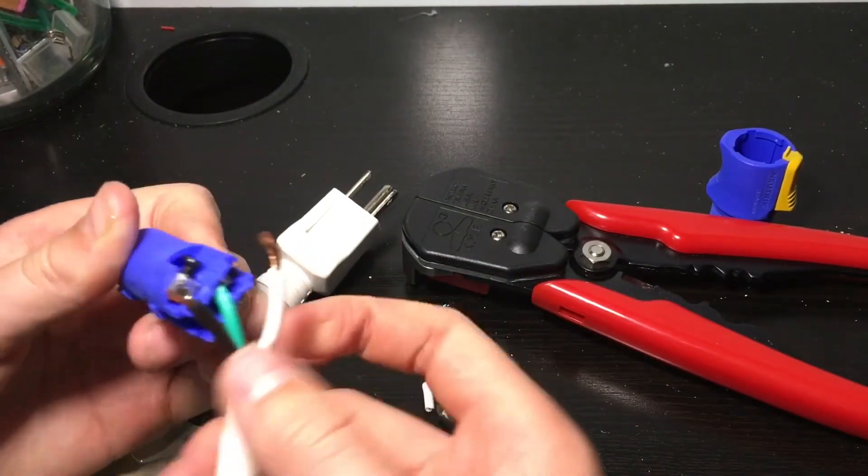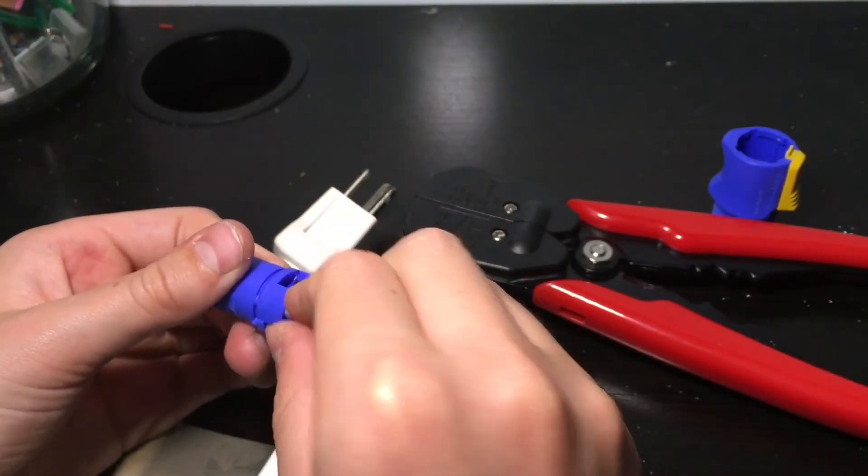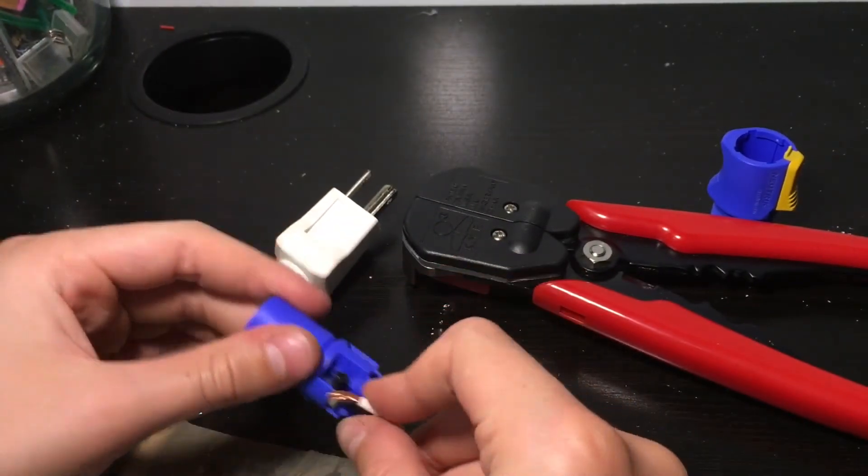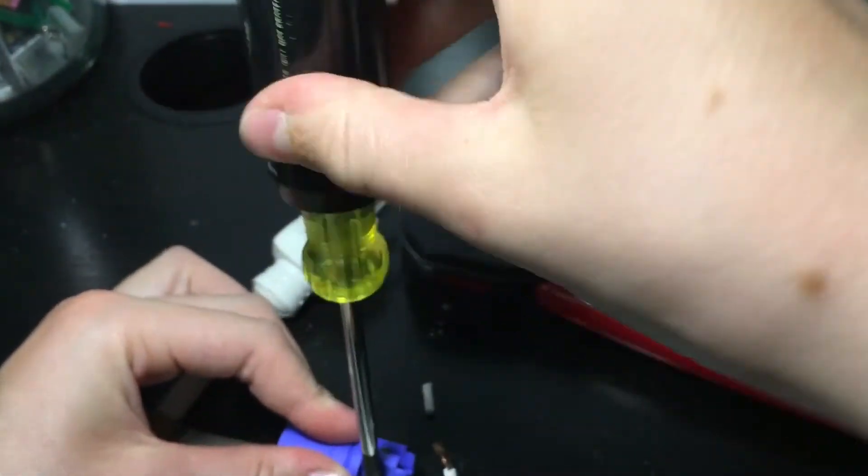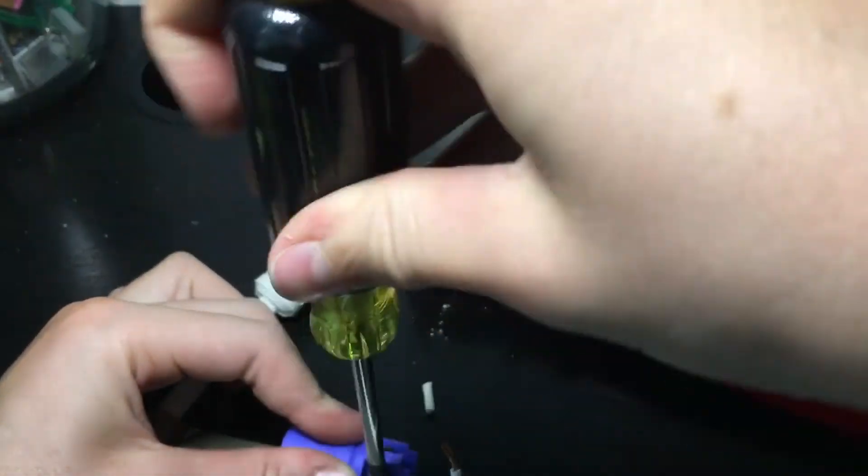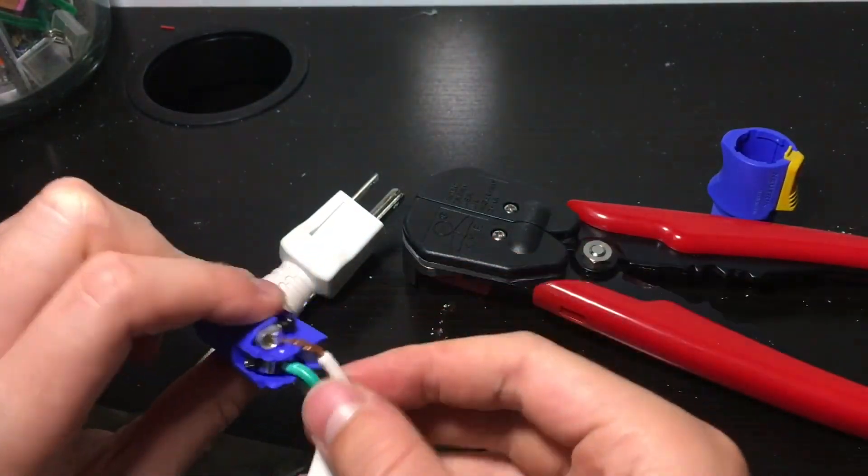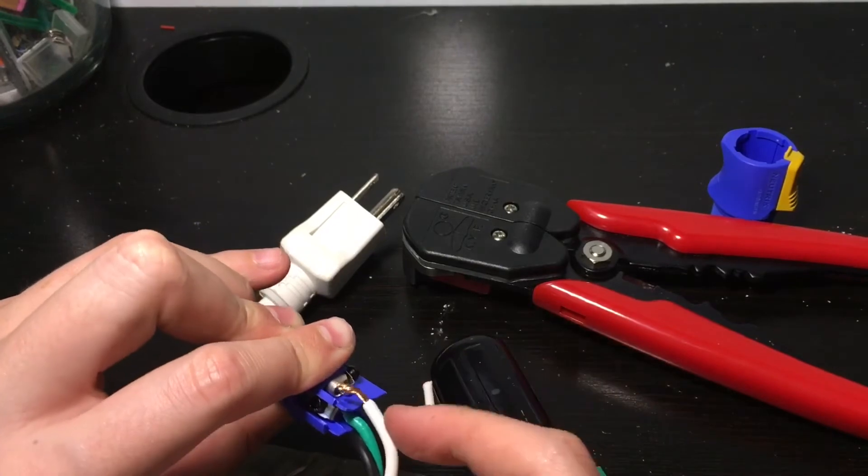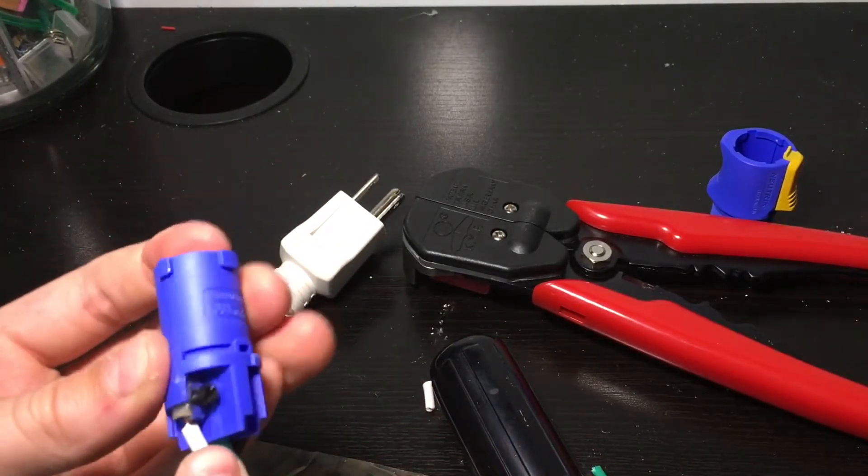Then do your next one. You're going to put black into the one that has the L, and then screw that down. We can assume by process of elimination that the last one, the white cable, goes into neutral.